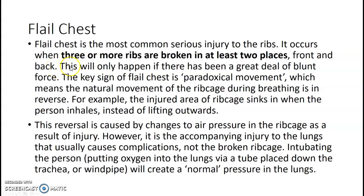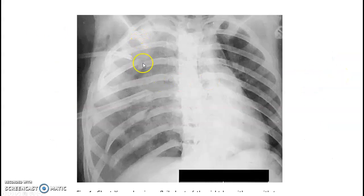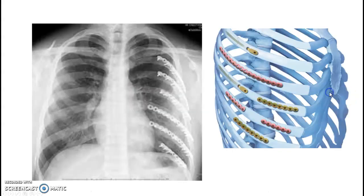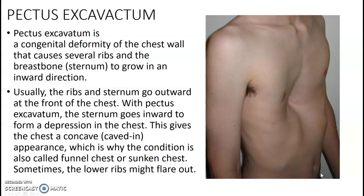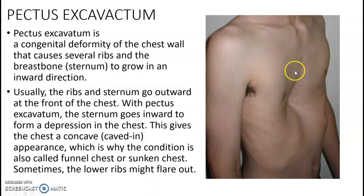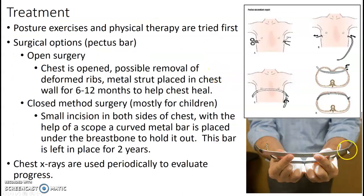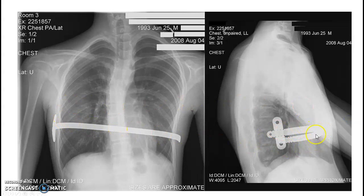Flail chest is when three or more ribs are broken in at least two places — usually from blunt force. It usually requires surgery, so you might see this in the OR. We often get called in for a portable chest x-ray at the end of these cases, and the patient may come in for a two-view chest as a follow-up post-op. Pectus excavatum is a congenital deformity of the chest wall where several ribs grow inward, causing the chest to look sunken in. Bars are surgically placed into the chest to open the chest wall, and you might see these post-op on PA and lateral chest images.